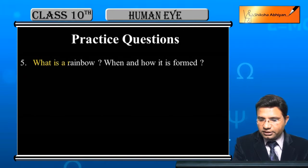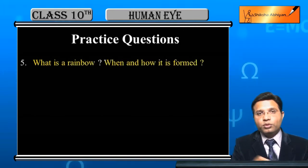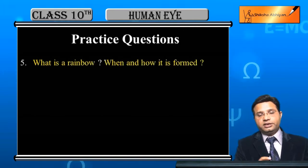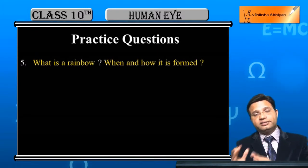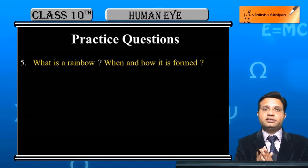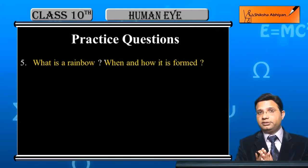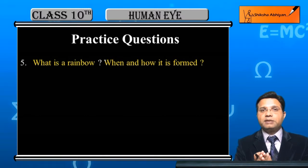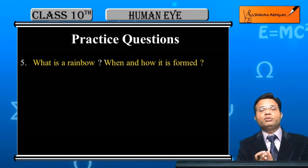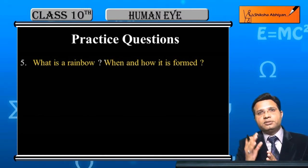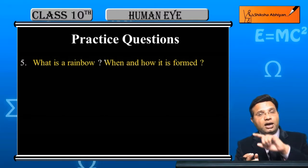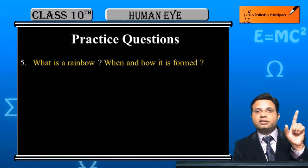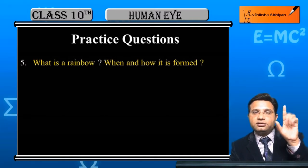What is a rainbow? When and how is it formed? Generally, when there is a little rain, we see an arc in the sky.